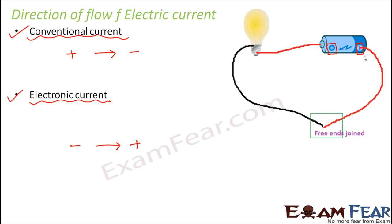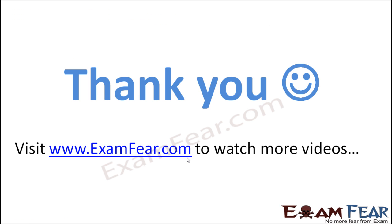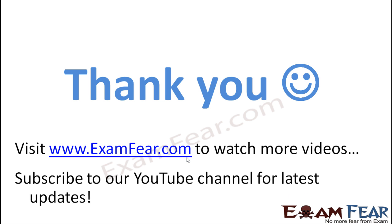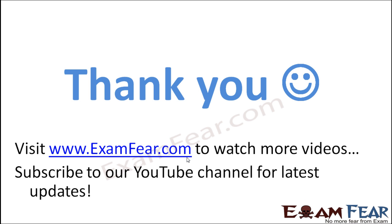So that is the confusion about the direction of electric current and that is why we discussed this. Electronic current means electrons constitute electric current — electrons are the carriers. In conventional current, it was assumed that protons are the ones which flow and constitute electric current. Thank you. Please visit examfear.com to watch more educational videos. Please do not forget to like and subscribe to our YouTube channel for latest updates. Thank you once again.